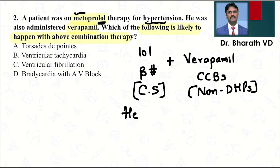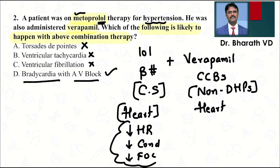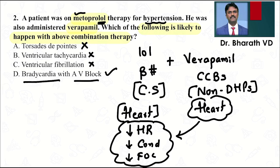Remember, both drugs act on the heart. They will not cause tachycardia or ventricular fibrillation. They cause bradycardia with AV block, because beta blockers decrease heart rate, decrease conduction, and decrease force of contraction. Verapamil also suppresses heart rate, conduction, and force of contraction. So if used together, the patient will have severe bradycardia and severe AV block.